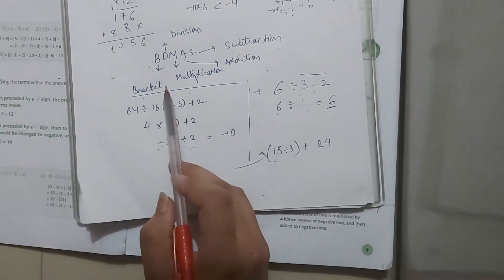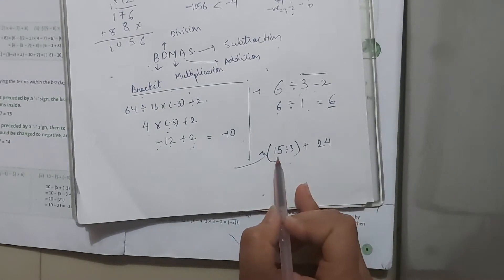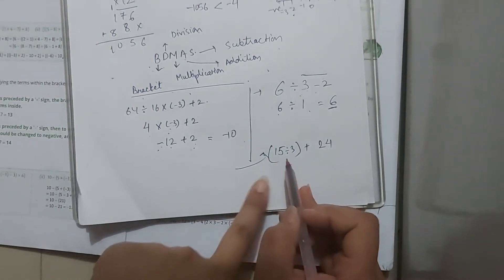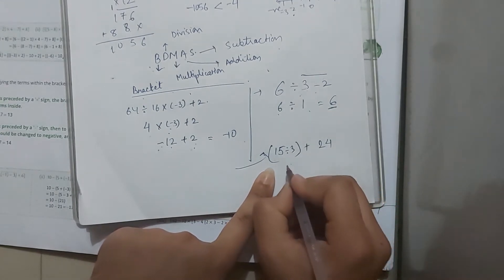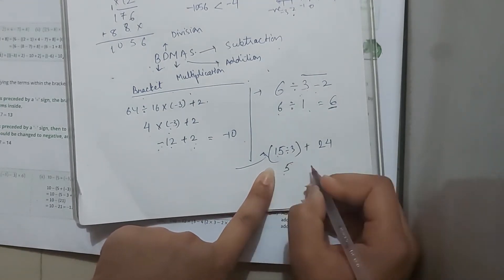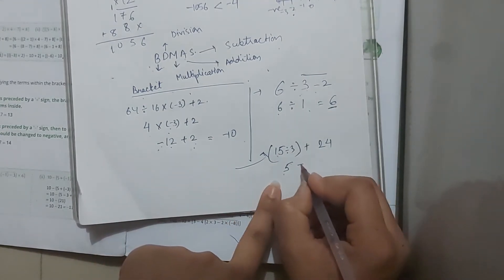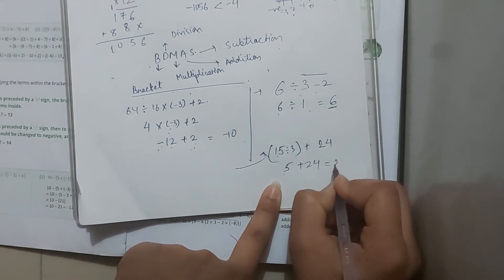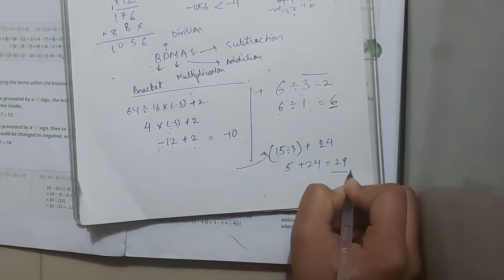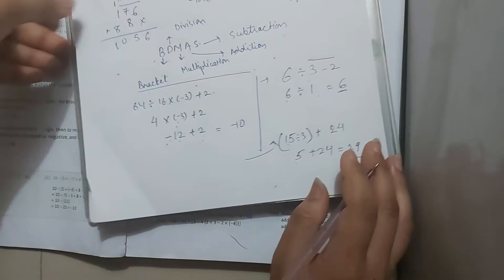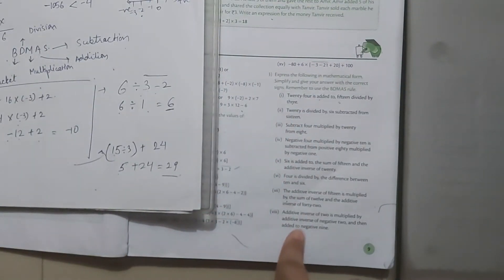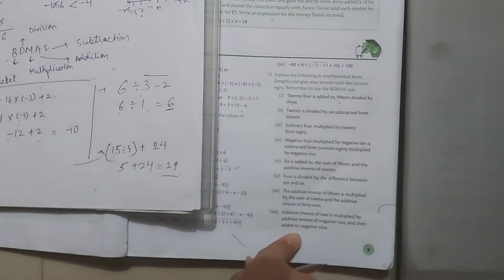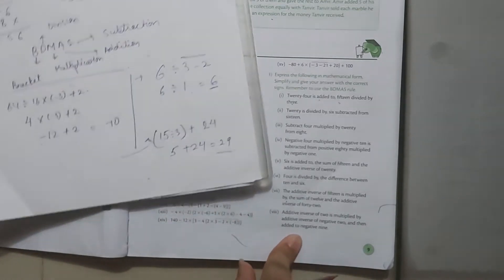Now according to the BODMAS rule, we solve division first: 15 divided by 3 equals 5. Then 5 plus 24 equals 29. Our answer is 29. The rest of the questions are similar — just try them by yourself. If you have any kind of doubt, ask me in your face-to-face interaction.